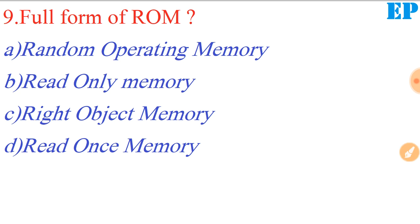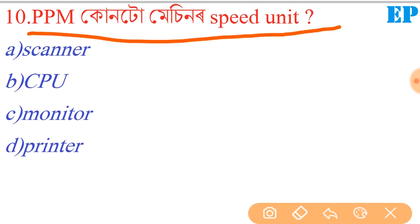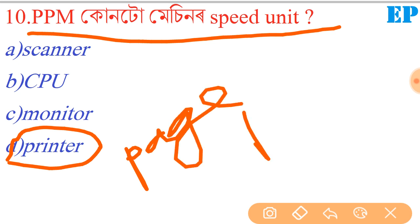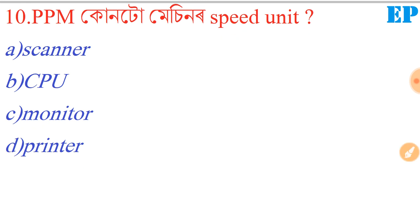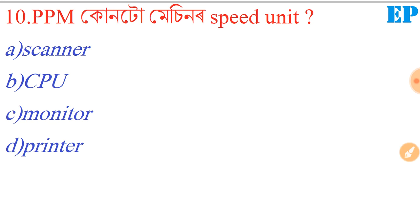The next question: PPM is a control machine speed unit. PPM is a printer speed unit. PPM means pages per minute. PPM is a printer speed unit — pages per minute. Note: PPM is not parts per million in this context; here PPM is a printer speed unit.